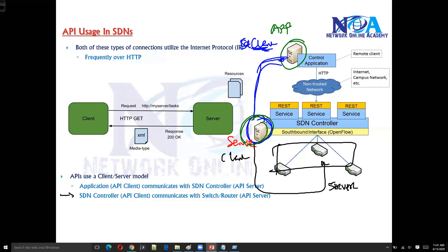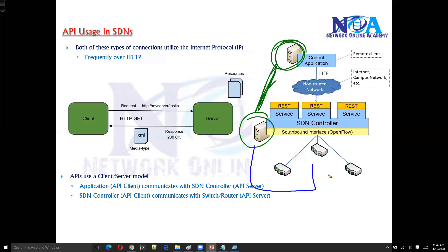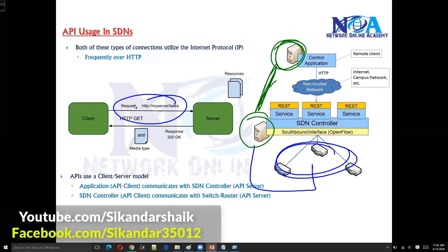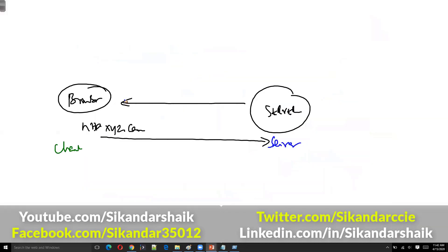The controller as client may ask the networking devices: 'display your CPU information,' 'display your interface status,' 'update me if there are changes,' 'apply this security policy,' or 'apply this quality of service policy.' So the communication between the application and controller, and between the controller and networking devices in SDN, is completely based on HTTP requests — following a client-server model similar to how you retrieve web pages.